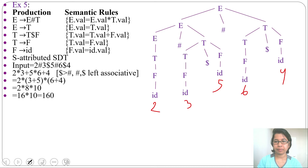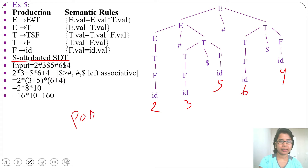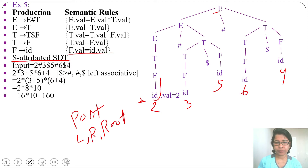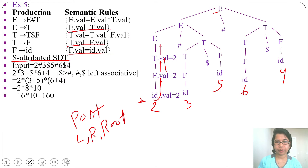This is an S-attributed STT, so we evaluate in post-order traversal (left, right, root) or bottom-up during reduction. Starting from the leftmost child: ID.value = 2. Then F.value = ID.value = 2. Then T.value = F.value = 2. Then E.value = T.value = 2. Now we visit the right subtree — ID.value = 3, F.value = 3, T.value = 3.